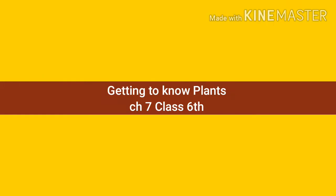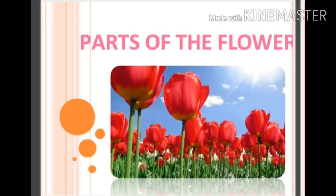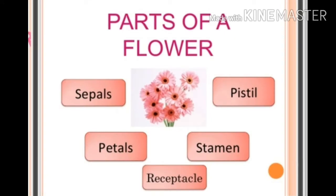Getting to know plants, chapter 7 for class 6. Today we will study about flower and its parts. The flower is the most beautiful and most attractive part of a flowering plant, and we can identify a plant from its flower.